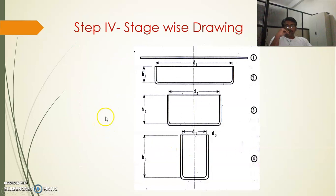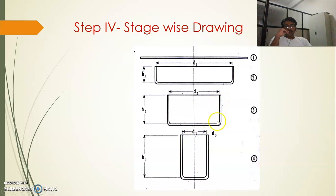Step four is the stage-wise drawing. You must draw the stages according to how many are required. Stage one is the blank. Then it starts to take the curved shape with the first drawing operation. Then the diameter decreases and height increases. In the final stage, the final diameter and final height are achieved. However many draws are required in your problem, you must draw the stage-wise diagram accordingly.